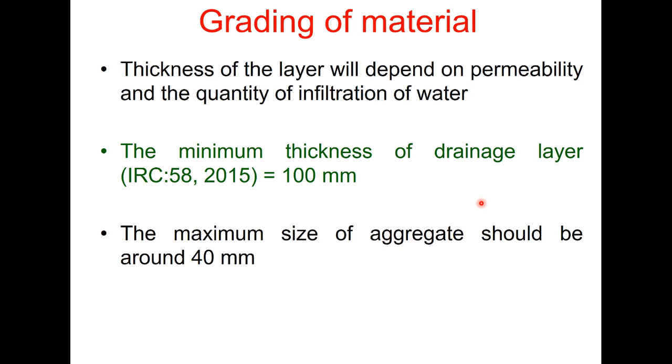The thickness of the layer will depend upon the permeability and the quantity of the infiltration of water but IRC 58 suggests a minimum of 100 millimeter thickness for drainage layer and the maximum size of aggregate is recommended as around 14 millimeter.